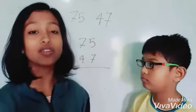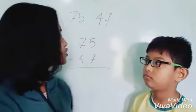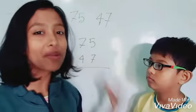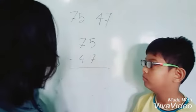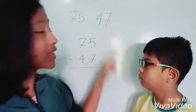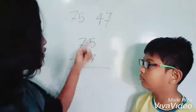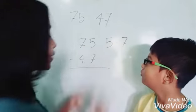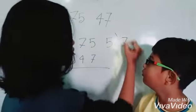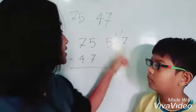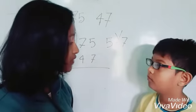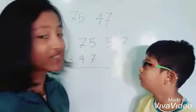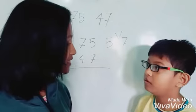So, let's think about how to calculate it. How is this subtraction different from the previous one? Because here we cannot remove 7 from 5. Thurston, can we remove 7 from 5? No. But we can remove 7 from 15. Can't we? Yes.